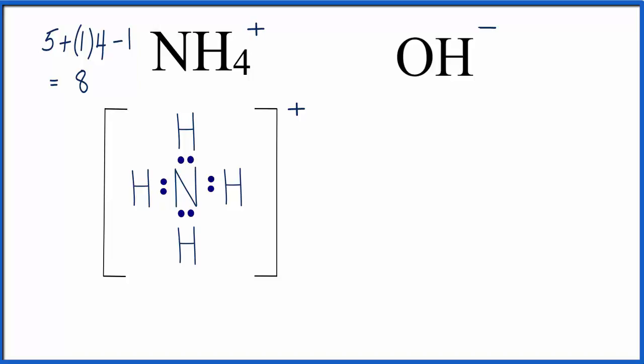Now we need to do the hydroxide. So we'll start by counting the valence electrons. Oxygen is in group 16, sometimes called 6A. It has 6 valence electrons, plus the 1 for hydrogen. And now we have a negative charge, that means we have an extra electron. So let's add that extra electron there. And when we do that, we have 6 plus 1 is 7, plus 1, 8 valence electrons for the OH minus ion.